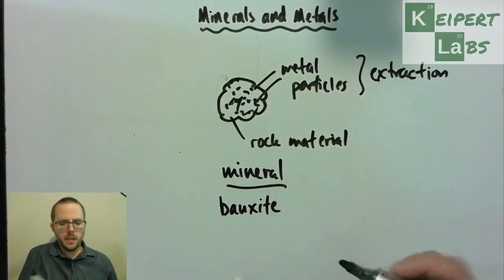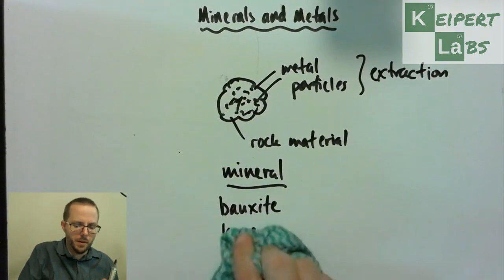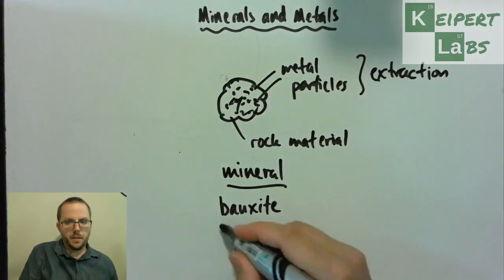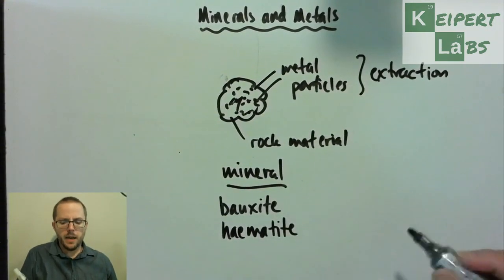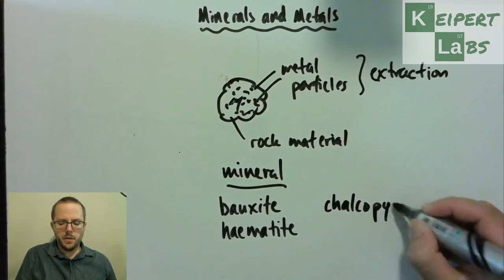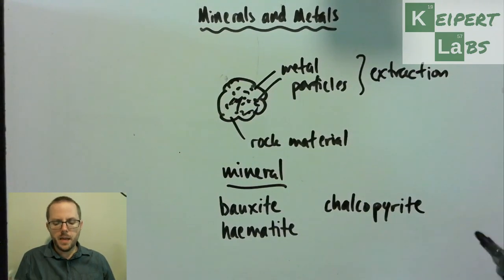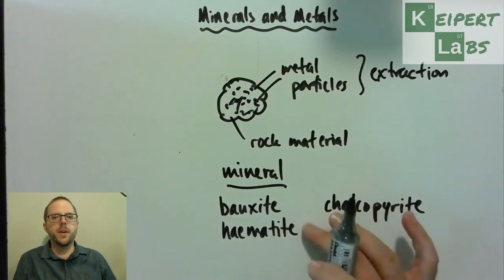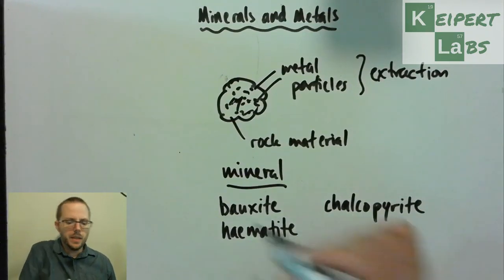We have bauxite, hematite. Oops, I didn't get the spelling right on that one. You'll see why it was a little tricky in a second. So hematite. Another one that we've got is called chalcopyrite. It's kind of got that Greek sort of sounding bit at the end. And so what we have here, these are rocks or parts that we would find inside rocks that contain certain metals.